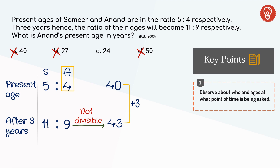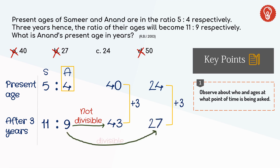Let's validate 24 as well. Say Anand is 24 today — after 3 years he is 27. 27 is divisible by 9, hence 24 satisfies both the conditions given in the question and is the right answer.